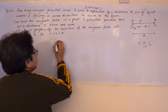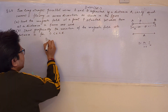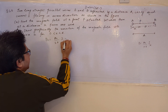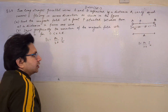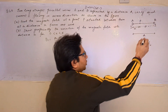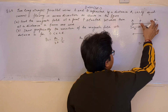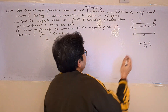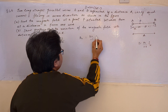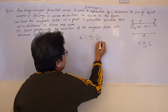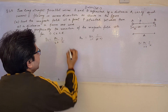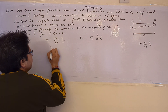The field at P due to wire A is B1 = μ₀/2π × i/x, in a particular direction. Similarly, B2 is the field due to wire B, which is at a distance d minus x from point P, so B2 = μ₀/2π × i/(d−x). Since these two fields are in opposite directions, the net field B_net is equal to B1 minus B2.